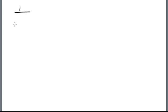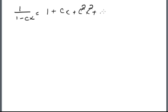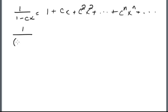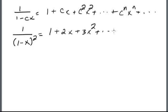We've computed the multiplicative inverse for 1 over 1 minus Cx, which equals 1 plus Cx plus C squared x squared plus dot dot dot plus C to the n, x to the n plus dot dot dot, where C is just some arbitrary complex number. Then last time we computed the multiplicative inverse of 1 minus x squared, which turned out to be 1 plus 2x plus 3x squared plus dot dot dot plus n plus 1, x to the n plus dot dot dot.